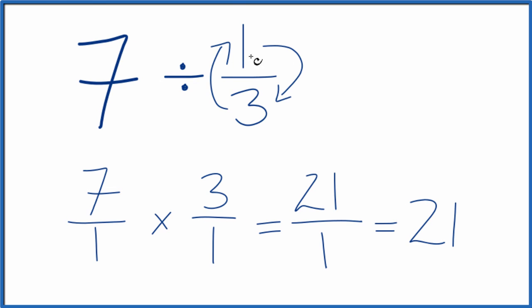So 7 divided by 1/3 equals 21. If you multiply 21 by 1/3, you get 7. So we did this part correctly.